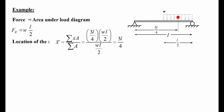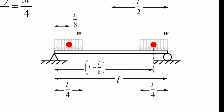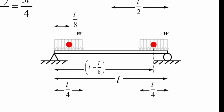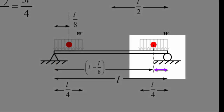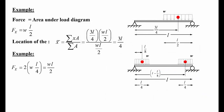Now a more involved example where we use the summation properly. We have two distributed loads, both distributed over a length of L/4 and both with magnitude W. The centroid of the first load is at distance L/8 from the y-axis, and the centroid of the second load is at distance L minus L/8 (with L/8 being the distance from the centroid of the second load to the end of the beam). Let's calculate F_E.